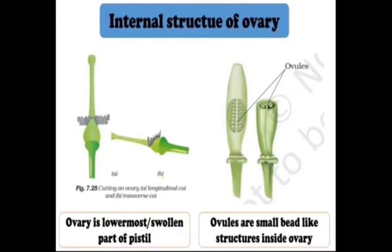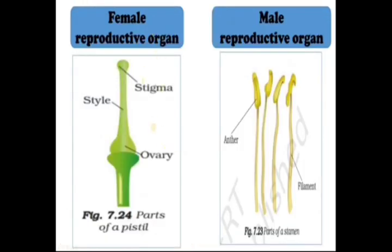Now let us look at the internal part of the ovary. If you cut a cross-section of the ovary, inside you can see a small bead-like structure — that is called ovules. So inside the ovary you can see ovules when you look at the cross-section.